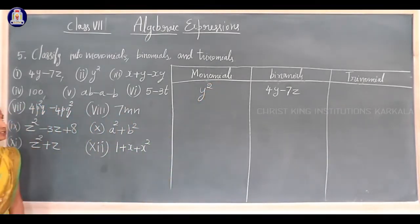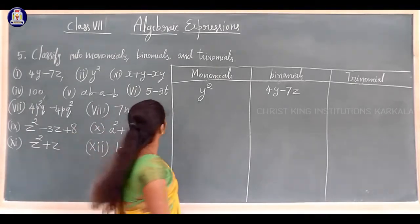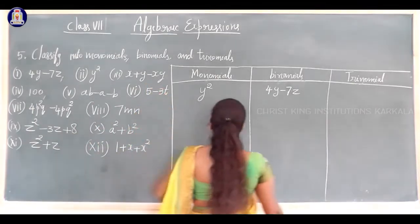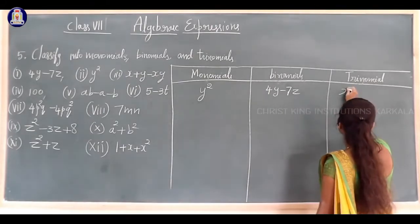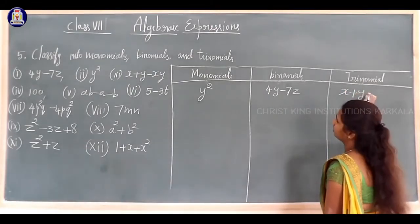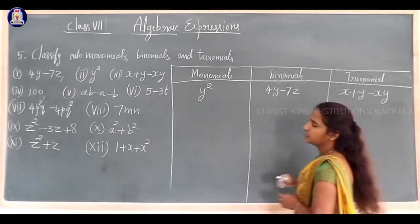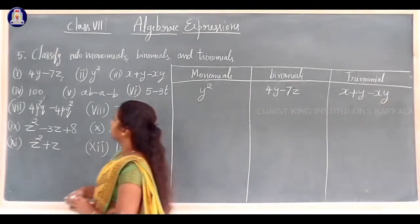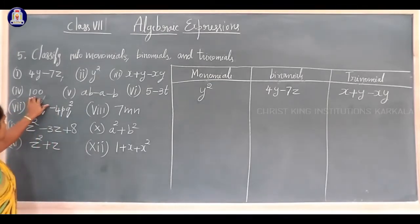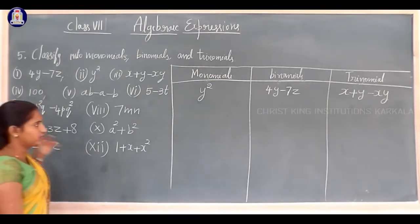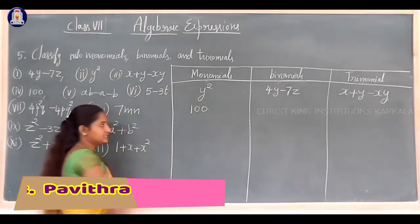The third expression is x plus y minus xy, which has three terms, so this is a trinomial. The fourth expression is 100 — there is no variable, only the number 100 — so that comes under monomial, because it is a single term.